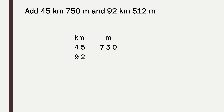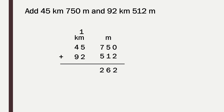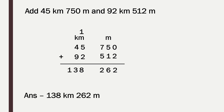We will write 92 kilometer and 512 meter. Now we will add: 0 plus 2 is 2, 5 plus 1 is 6, 7 plus 5 is 12 — write 2, carry 1. 5 plus 1 is 6, 6 plus 2 is 8, 9 plus 4 is 13. So our answer is 138 kilometer 262 meter.